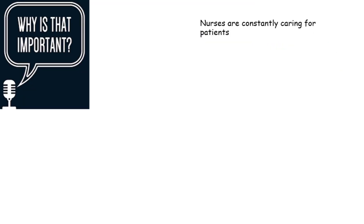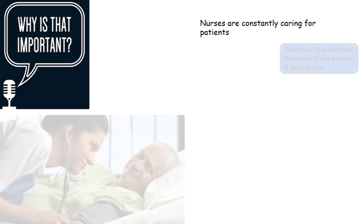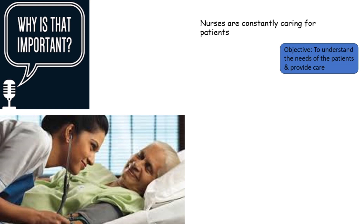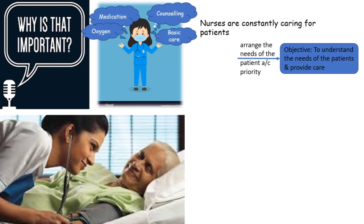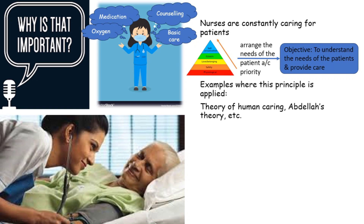Now why is it important for us? Because we are constantly caring for patients. Our main objective is to understand the needs of the patients and provide care accordingly. We must arrange the needs of the patient according to priority, and Maslow's theory helps us in that arrangement. We have often seen the application of this principle in many theories before, like the theory of human caring, Abdullah's theory, etc.